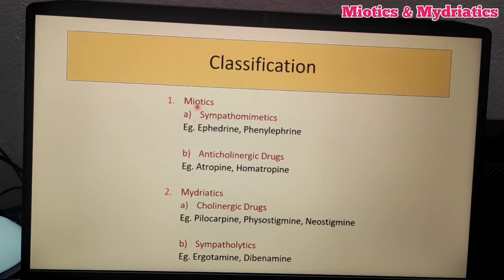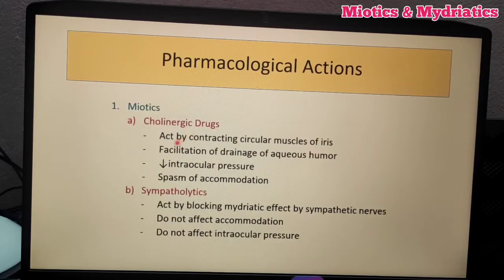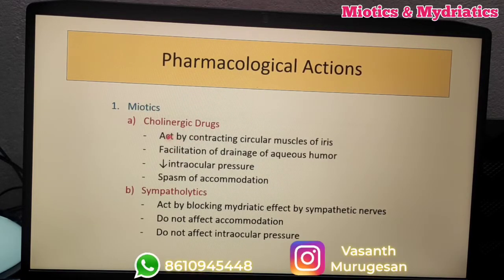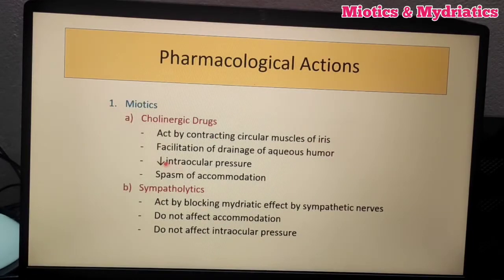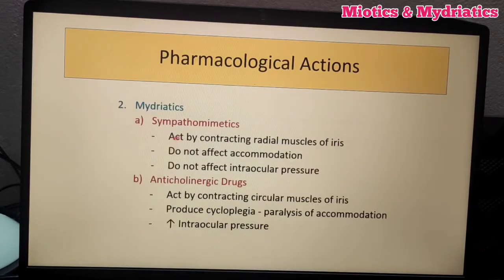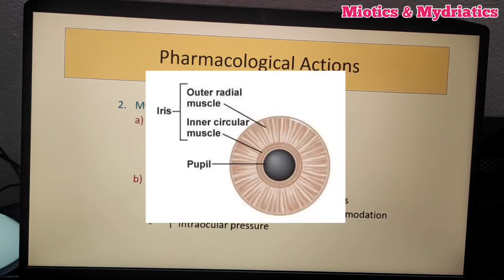There are two categories of miotics and mydriatics, and there are two categories of antagonism. How is miosis produced? It acts by constricting the circular muscles of the iris. It acts by contracting or constricting the radial muscles of the iris.